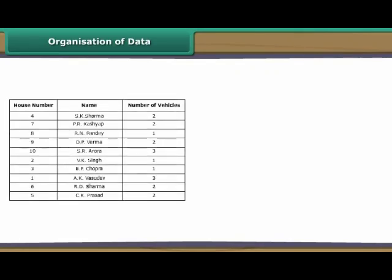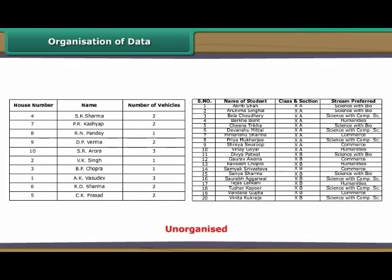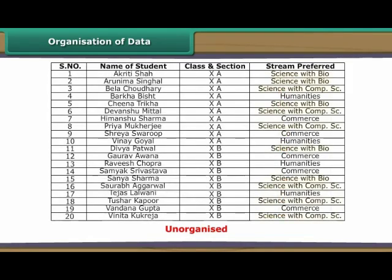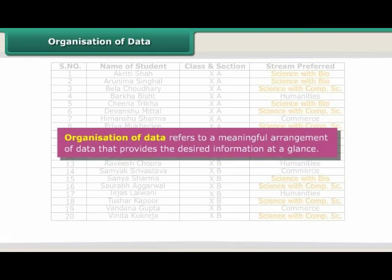Organization of data. The data collected by the RWA of the residents and the data provided by Sheetal to the academic in charge are unorganized. Why? The former does not tell the RWA at one glance the number of residents who own more than one vehicle. Similarly, the latter does not tell the academic in charge at one glance the number of students who have opted for science. Organization of data refers to a meaningful arrangement of data that provides the desired information at a glance. Let us now learn to organize data.